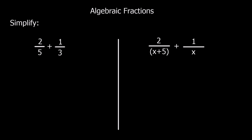To add fractions, we need to get the same denominator for both — the same bottom number for both fractions. So in this example, we're going to times this one by 3 and this one by 5. As long as we do the same to the top and the bottom of the fractions, they stay the same — they stay equivalent.